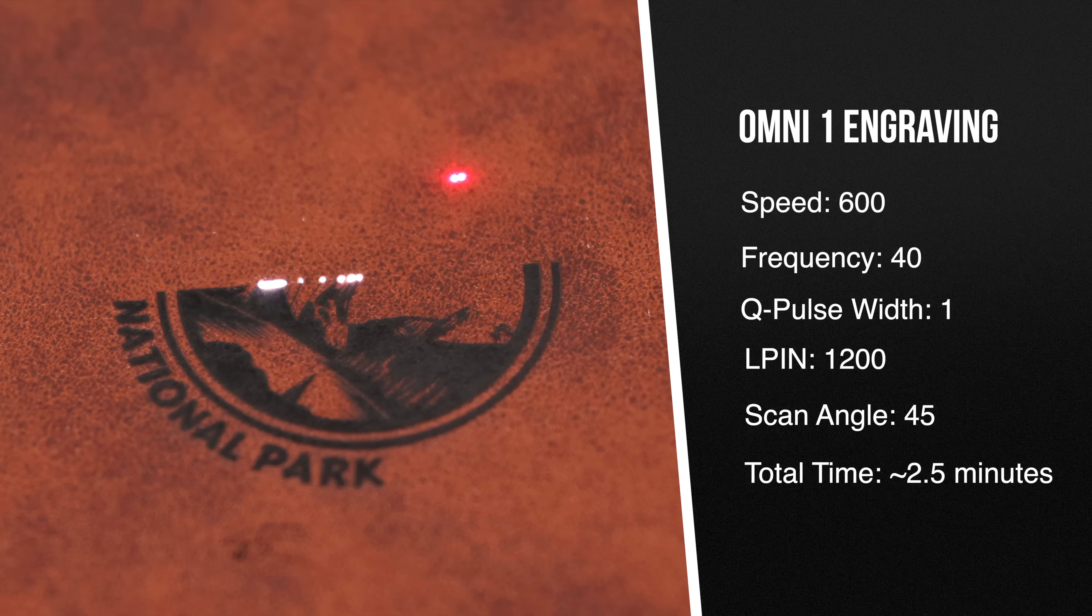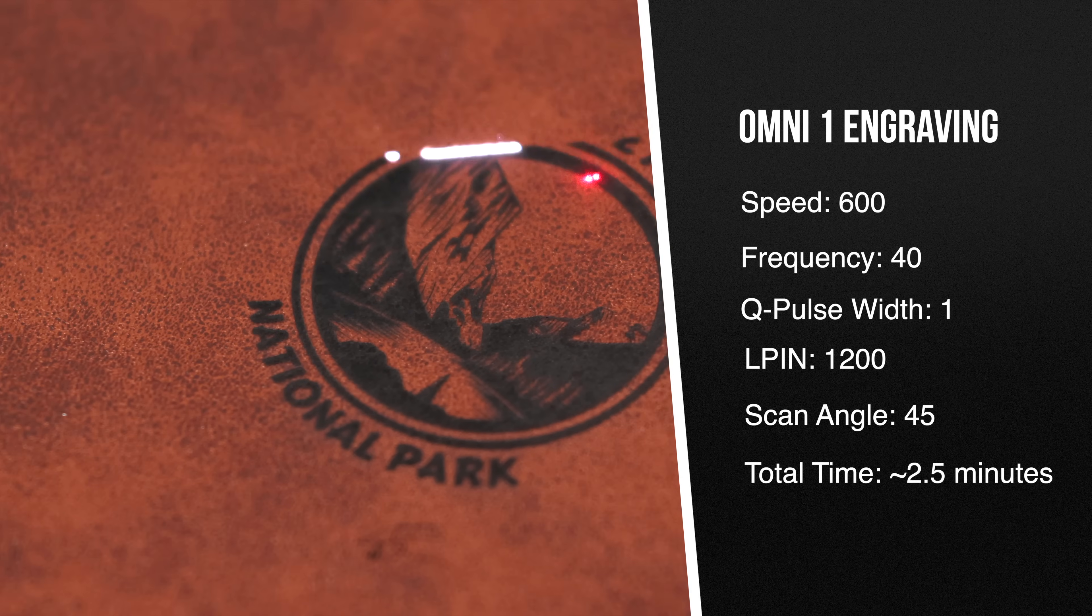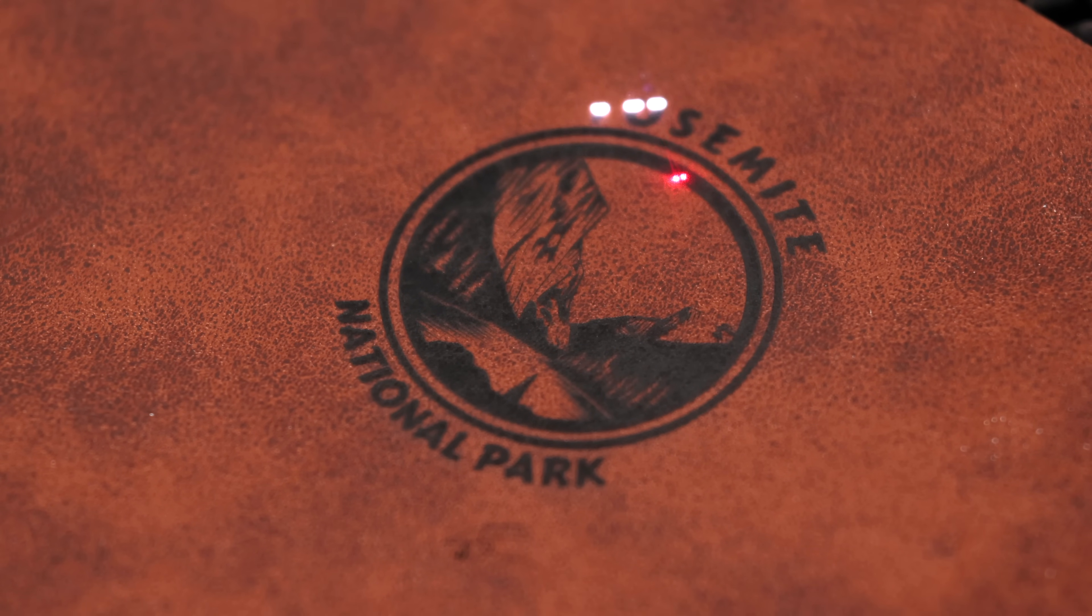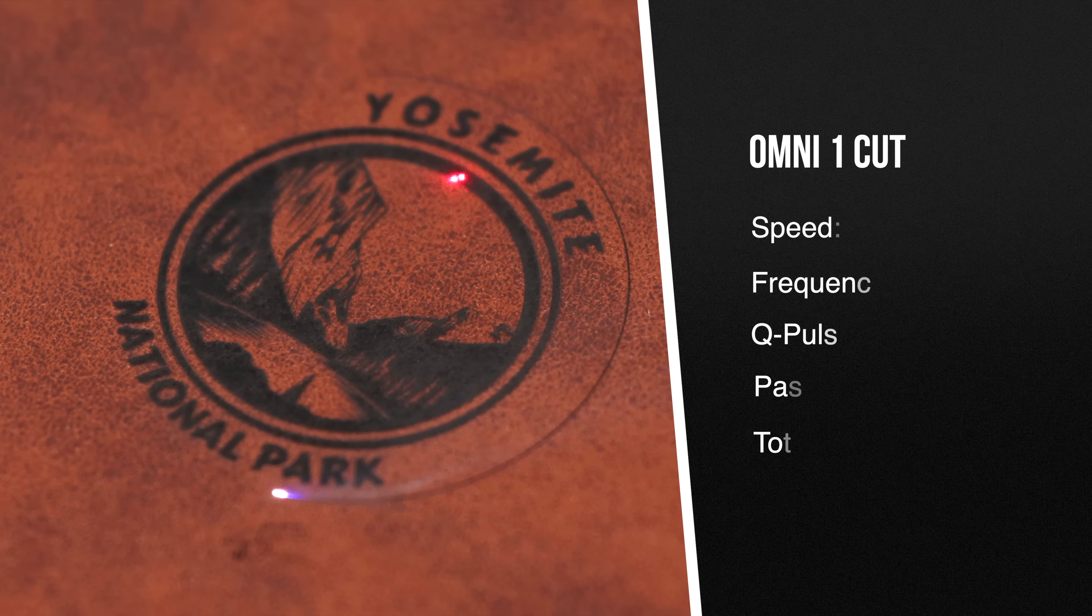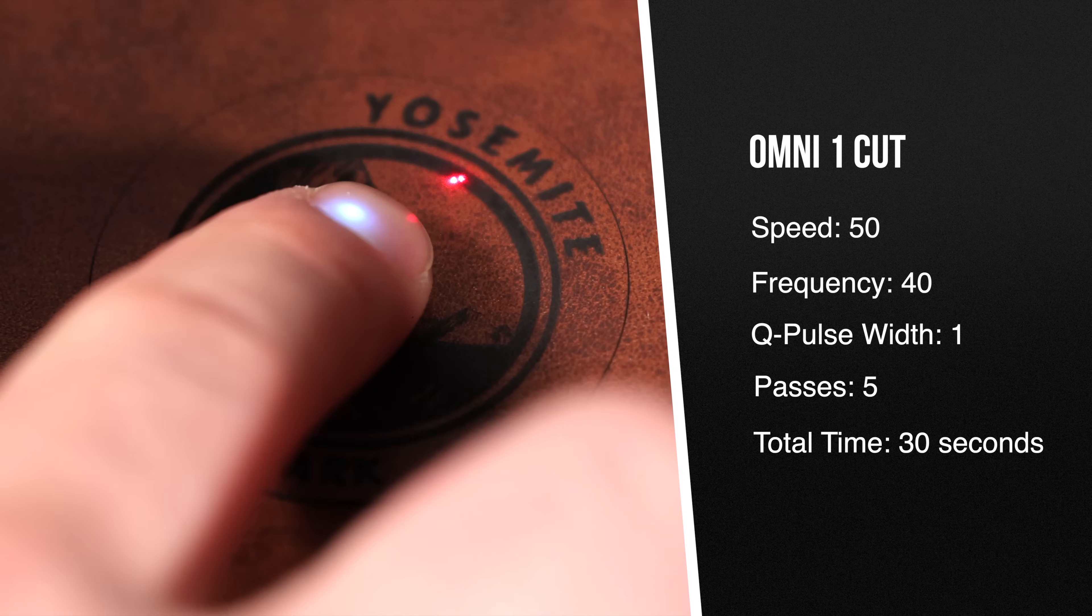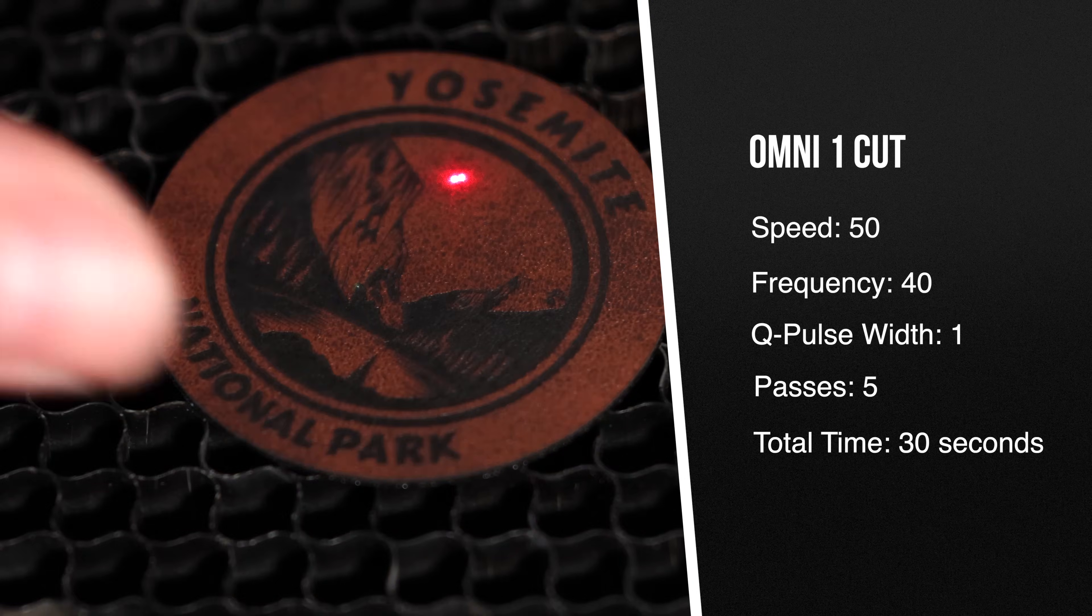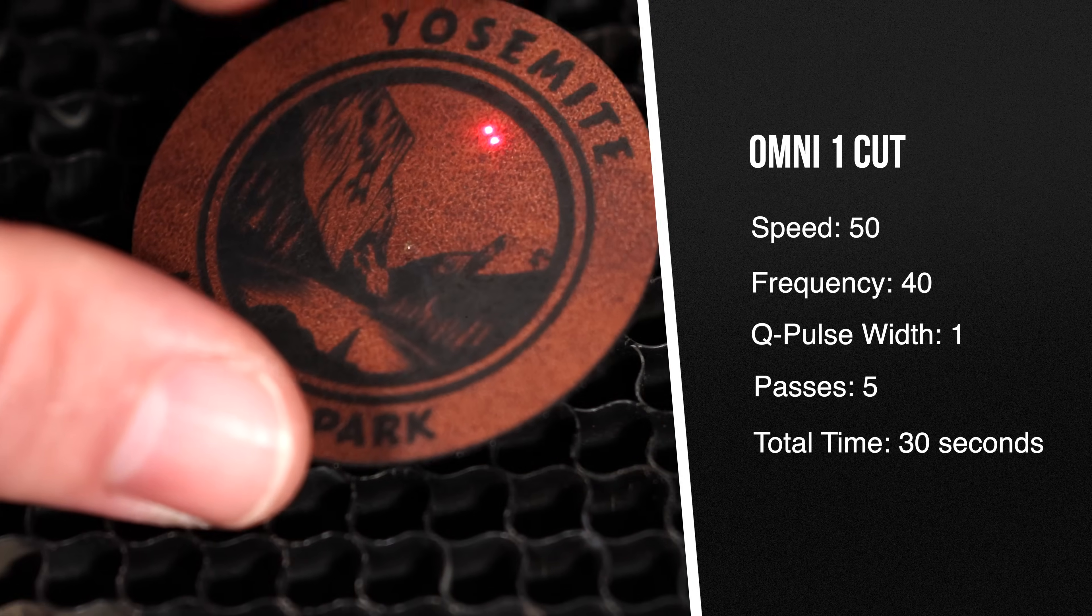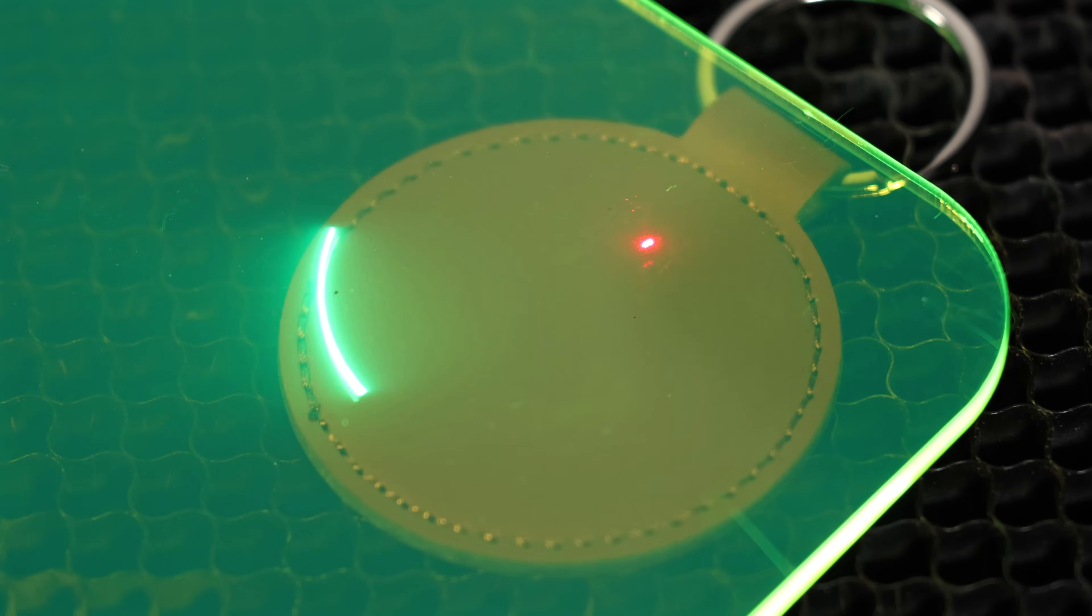It is really impressive how much detail you can get with this machine. Oftentimes, those details get burned away with a blue light laser, but here it is nice and clear. This leather also has a heat-activated adhesive on the back. And with our previous projects, we noticed that adhesive melting and then sticking back together when we cut out the patches. But with the Omni, that is not an issue.